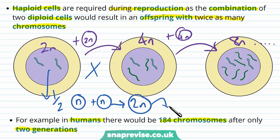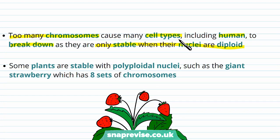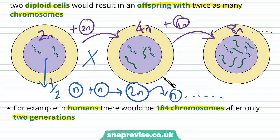So the individual will be 2N, those gametes will be N again, and it will just keep going and staying at 2N. The reason having too many chromosomes is bad is that it can cause many cell types, including human cells, to break down, because they're only stable when their nuclei are diploid. In human cells we only do well when we have these two sets of chromosomes. We have to make sure the gametes only have half, so that when they come together they only make 2N, then go down to half again, and so on.